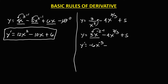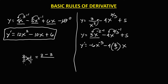Then for the second term: 2 over 3 times 4, then x to the power 2 over 3 minus 1. Using cross multiplication: 2 times 1 is 2, minus 3 times 1 is 3, over 3 times 1 is 3 — so 2 minus 3 over 3 gives negative 1 over 3. So x to the power negative 1 over 3. The derivative of the constant is 0.